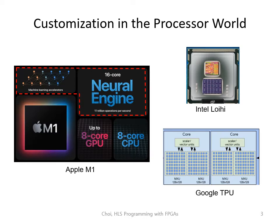Let me begin with the recent trend in the processor world. If you look at the processors being released the last couple of years, you will notice that many of them have custom accelerators on chip. Apple has released the M1 SoC, which has accelerators for neural network and machine learning. Intel Loihi has a spiking neural network accelerator, and Google TPU is a systolic array architecture.